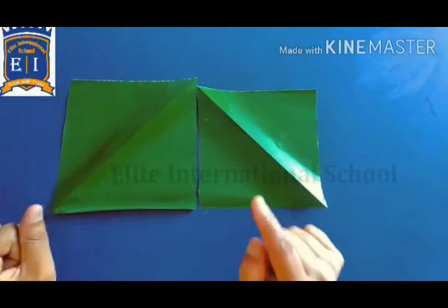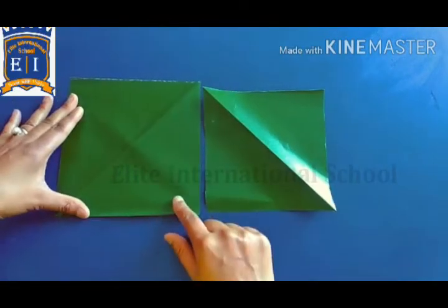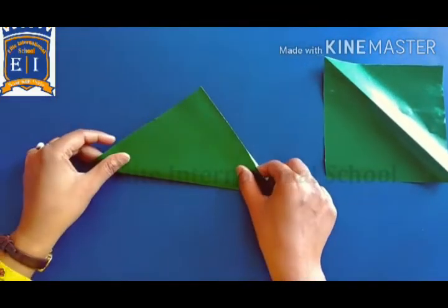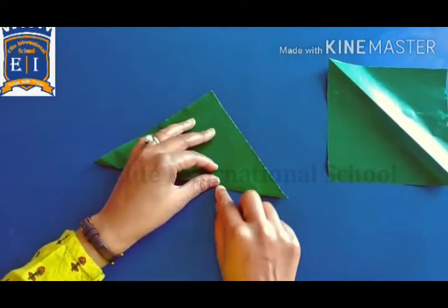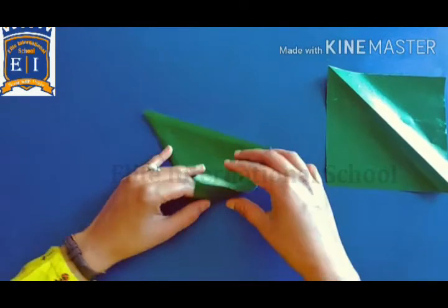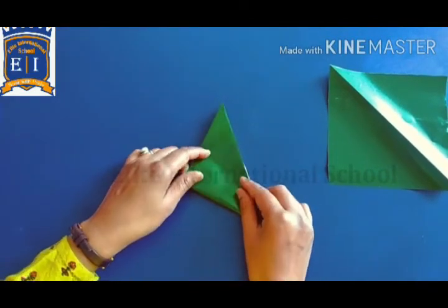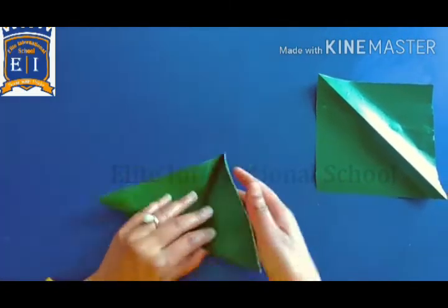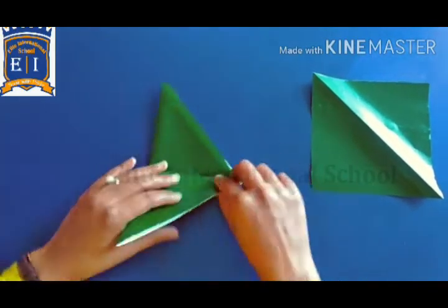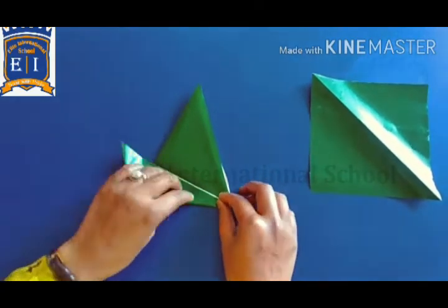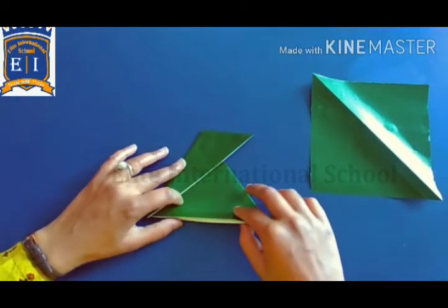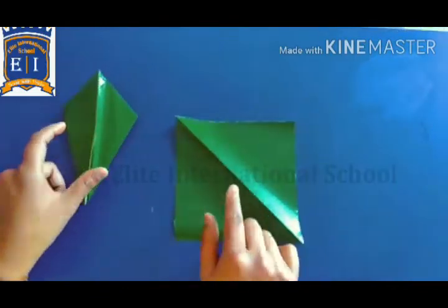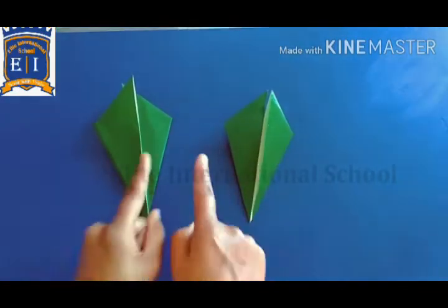Now take a green color sheet. Fold it in a triangle shape — first step. Second step: same triangle shape as you made for the carrot. Fold it in half, then same on the other side — half fold.